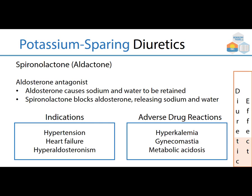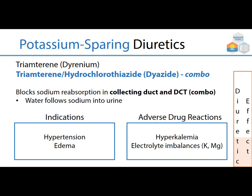Triamterene is often paired with hydrochlorothiazide as a combination. It blocks sodium resorption in the collecting duct and distal convoluted tubule; water follows sodium into the urine. Indicated for hypertension and edema, but far less diuresis compared to furosemide or hydrochlorothiazide. Adverse drug reactions include hyperkalemia and electrolyte imbalances — like spironolactone, we're holding onto potassium rather than losing it.